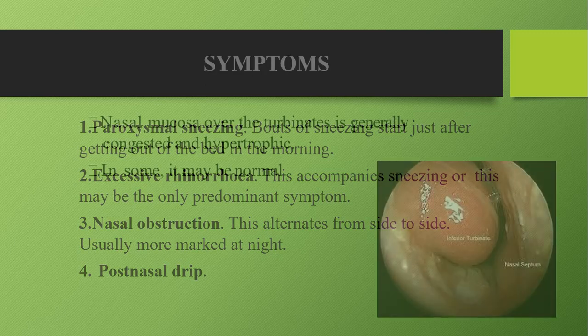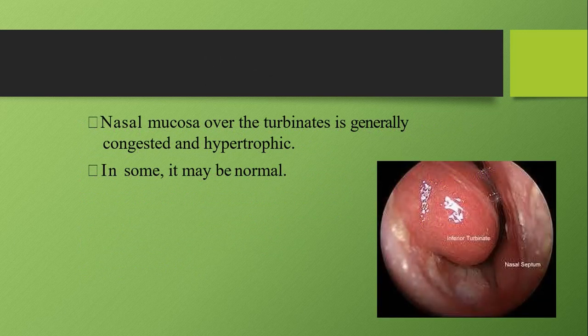Regarding signs, if we examine a patient with vasomotor rhinitis we can appreciate that the nasal mucosa over the turbinates is congested and hypertrophic. You can see in this picture that the mucosa over the turbinates appears congested and hypertrophic, but in some cases it can be normal, so in those cases it has to be a clinical diagnosis.